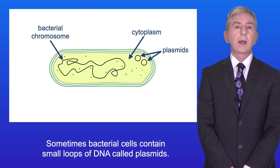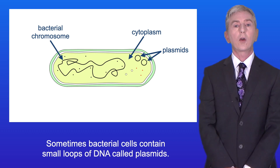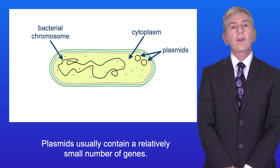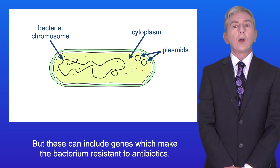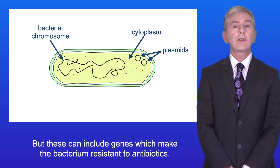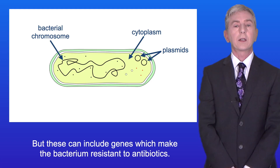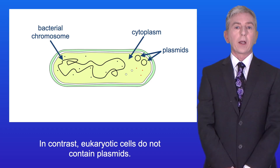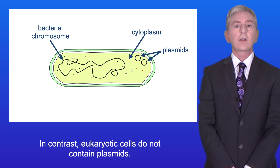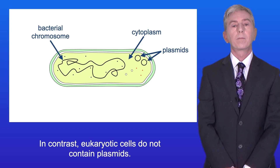Sometimes bacterial cells contain small loops of DNA called plasmids. Plasmids usually contain a relatively small number of genes, but these can include genes which make the bacterium resistant to antibiotics. So plasmids are very important for bacteria. In contrast, eukaryotic cells do not contain plasmids.